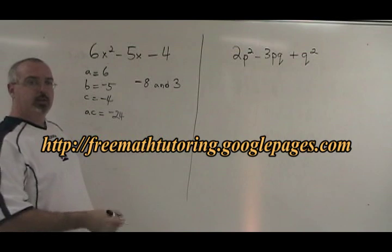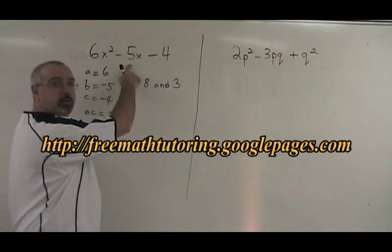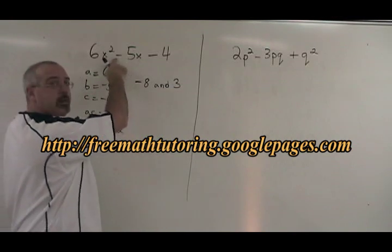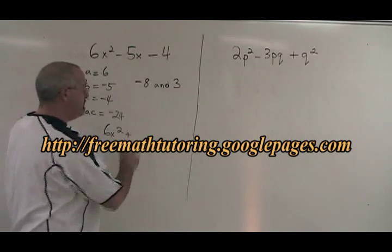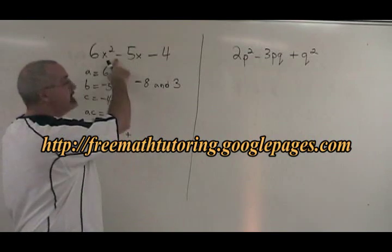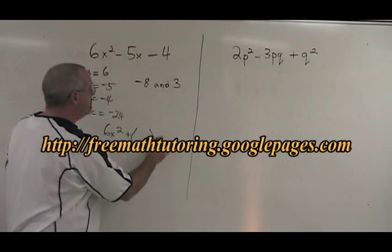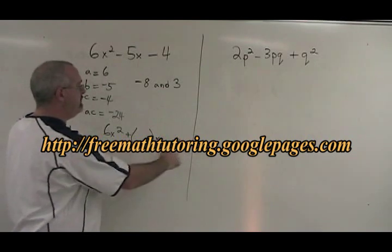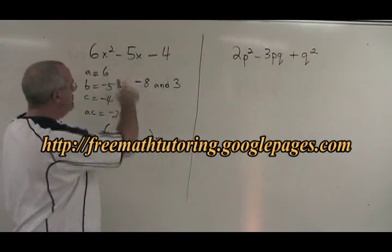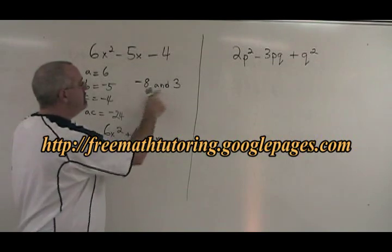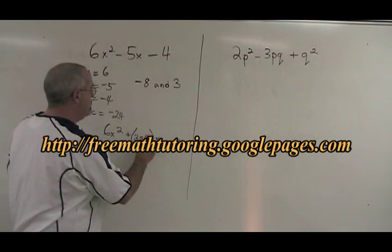Now things change even more. We have to rewrite our original question: 6x squared, then ignoring the fact that this is a minus sign, we put a plus. We always put a plus, regardless of what sign is here. Put a bracket, that x goes here, minus 4. We are rewriting the original question, the minus has become a plus, and the 5 has become a bracket. Then we write these two numbers inside the bracket, 3 minus 8.